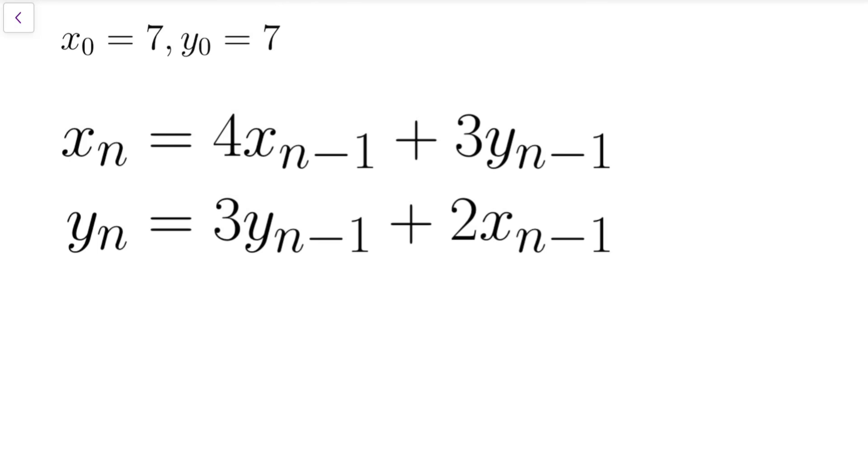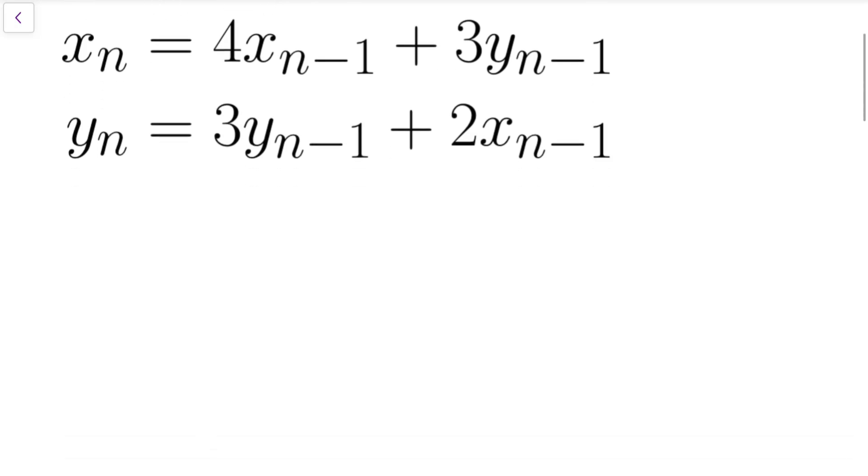This problem looks hard, but we can solve it with very simple tricks. In fact, for these two equations, if we add them, then we have xn plus yn at the left, which equals 6xn-1 plus 6yn-1. And so, if we consider another sequence instead, which is adding the terms of x and y...